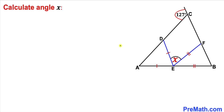Welcome to PreMath. In this video we have got this big triangle ABC as you can see in this diagram, such that angle C is 127 degrees. Moreover, this line segment AE equals this line segment DE, and this line segment EB equals this line segment EF. Now we are going to calculate angle X.